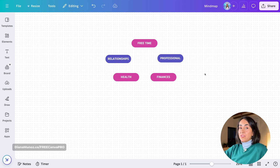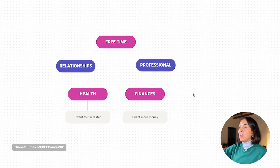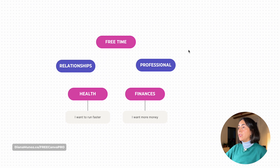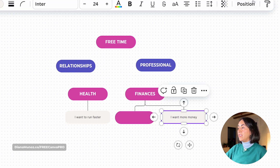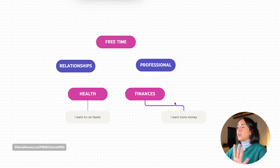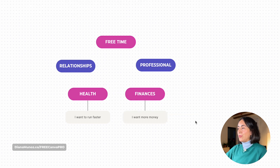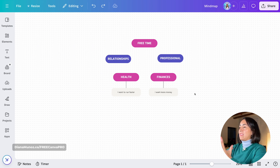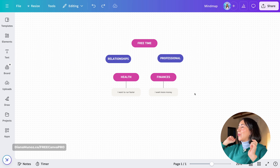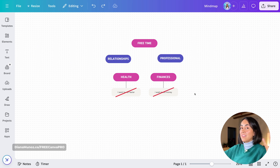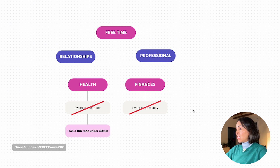I want you to start adding ideas or goals that you want to achieve in every category. So for example, in my case I want to run faster in terms of health, and in terms of finances I want more money. You're going to add more ideas to the other categories — you can add more than one per category. The next step is that instead of saying 'I want to run faster' or 'I want more money,' I want you to be more specific than that.